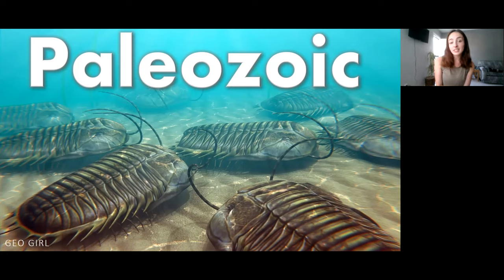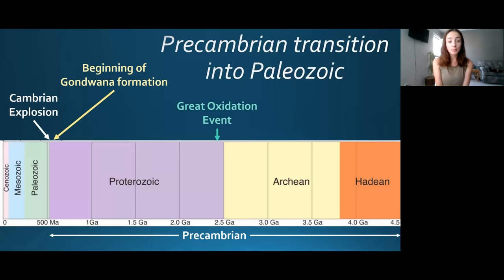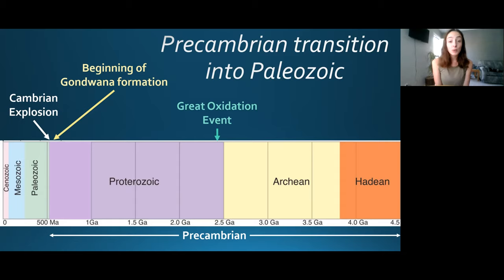Today we're going to be discussing the Paleozoic era. Last time we discussed the Precambrian, and now we're moving into the Phanerozoic eon, which includes the Paleozoic, Mesozoic, and Cenozoic eras. We're starting with the Paleozoic first. In today's lecture we're going to talk about geology, tectonics, some orogenies or mountain building events, and some paleogeography.